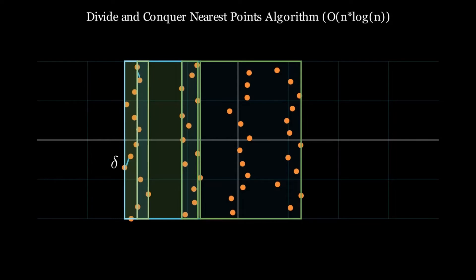Now, there's a possibility that delta is not the nearest distance in both partitions. There's a possibility that the closest distance is between a point in the left partition and a point in the right partition—across partition's shortest distance, if you will. We'll need to find this in linear time in order to achieve the O of n log n runtime complexity.